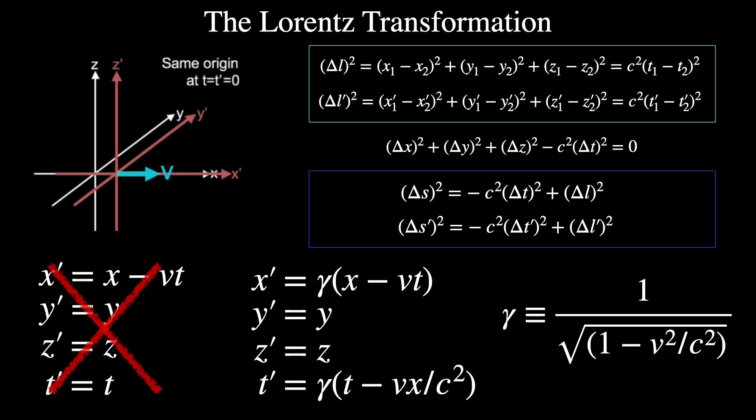Well, in the blue box we have two different spacetime intervals, each measured in their own frame. In the light bulb example, the spacetime intervals were the same and equal to zero.